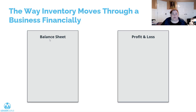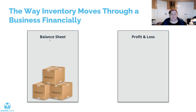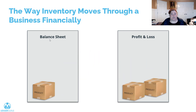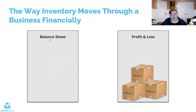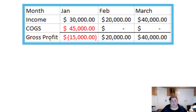The first thing I want to talk about is the way that inventory should move through a business financially. Basically, inventory at the time that you purchase it should not be expensed right away. It actually becomes an asset that sits on your balance sheet and is then expensed incrementally over time as that item is actually sold — hence the name cost of goods sold. That's when it hits your profit and loss statement.